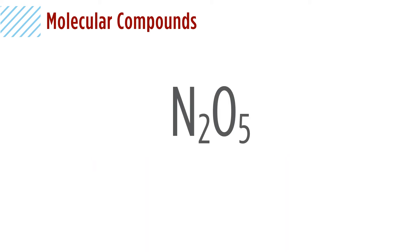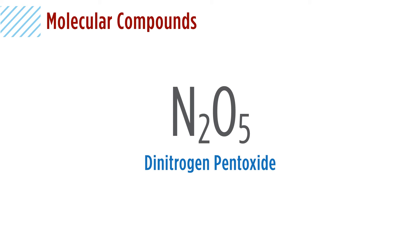Let's try N2O5. We have two nitrogens, so it's dinitrogen. For the oxygen, we have five, so pentoxide. The name is dinitrogen pentoxide.